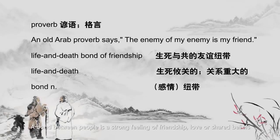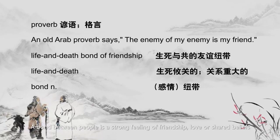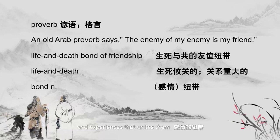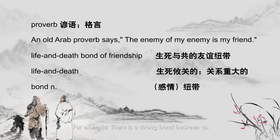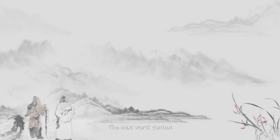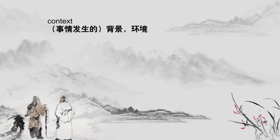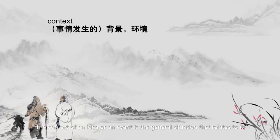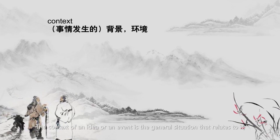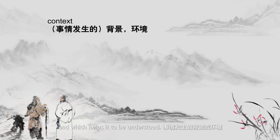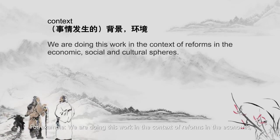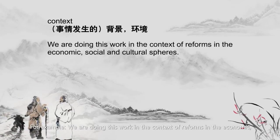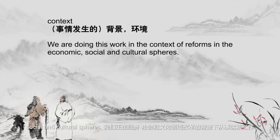'Bond' — a bond between people is a strong feeling of friendship, love, or shared beliefs and experiences that unite them. For example: there is a strong bond between us. 'Context' — the context of an idea or event is the general situation that relates to it and helps it to be understood. For example: we are doing this work in the context of reforms in economic, social, and cultural spheres.